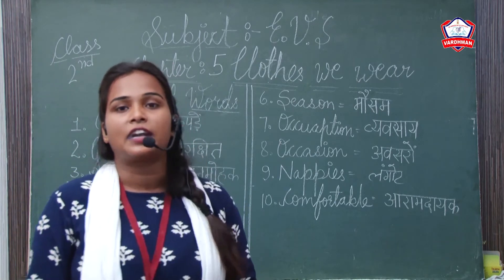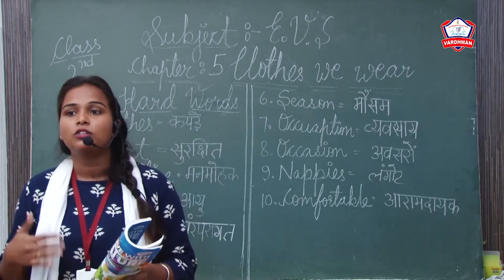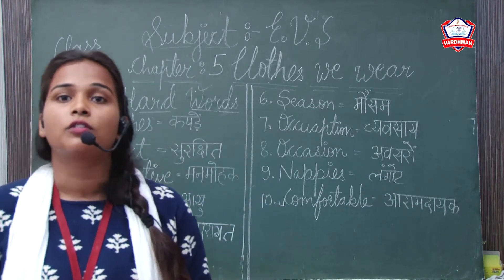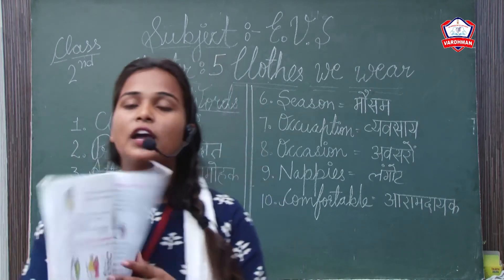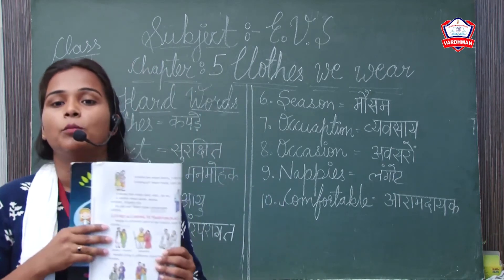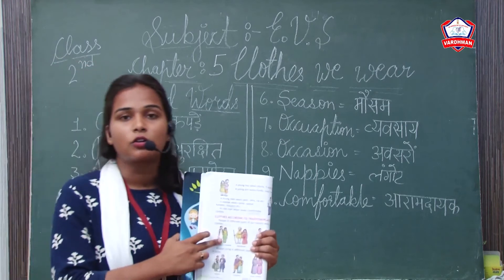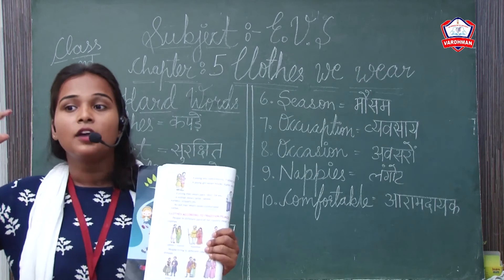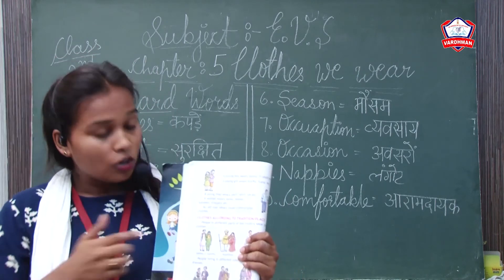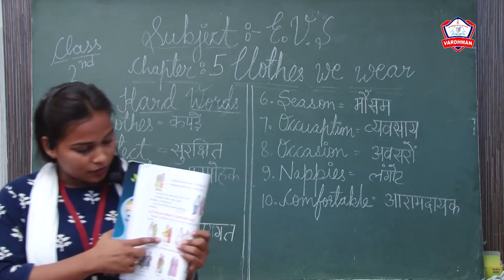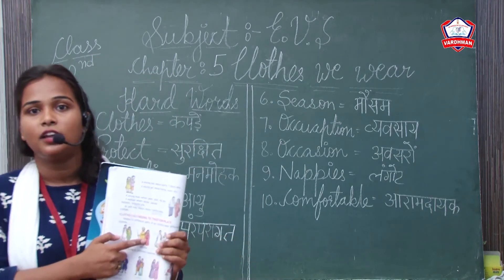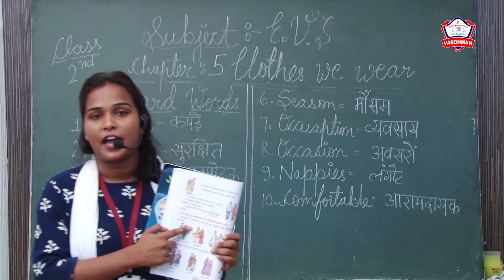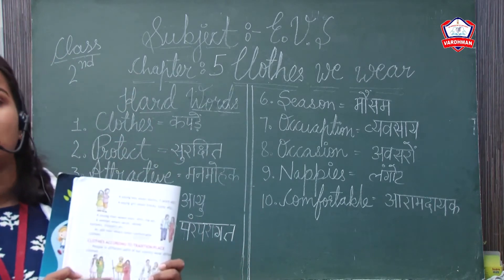Now let's talk about traditional clothes. People in different parts of our country wear different clothes. In Jammu and Kashmir, a girl wears a kurta below the knee and a boy wears a skull cap. In Rajasthan, a lady wears a gagra and choli, and a boy wears a dhoti, kurta, and pagdi on his head.